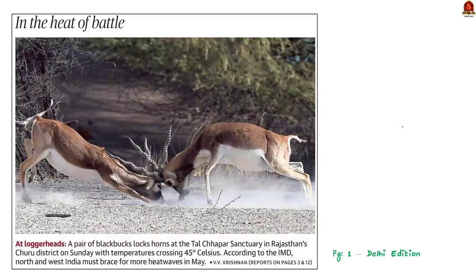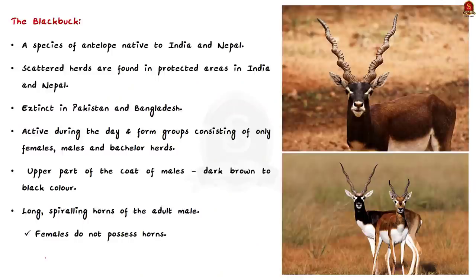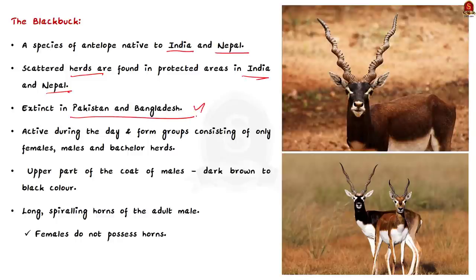Our next news article is based on an image showing a pair of black bucks locking horns, taken at the Talchapar Sanctuary in Rajasthan's Churu district. Let us use this as an opportunity to learn some important facts about black bucks. The black buck or Indian antelope is a species of antelope native to India and Nepal. It was once widespread throughout the Indian subcontinent, but now only scattered herds are found in protected areas in India and Nepal. It has become extinct in Pakistan and Bangladesh — so if a prelims statement says it is found in Pakistan and Bangladesh, it is wrong.